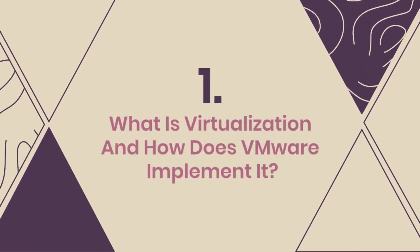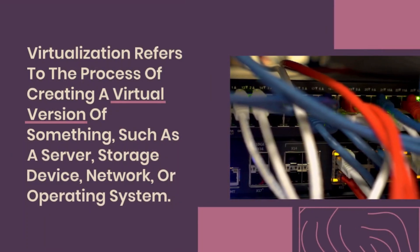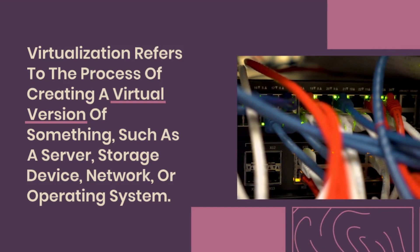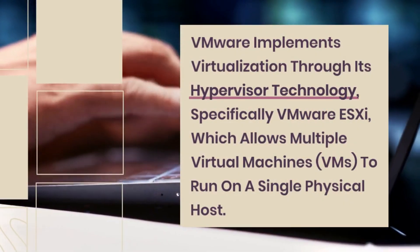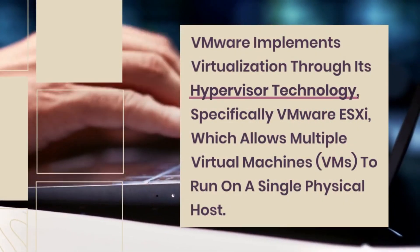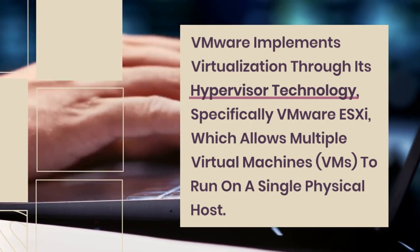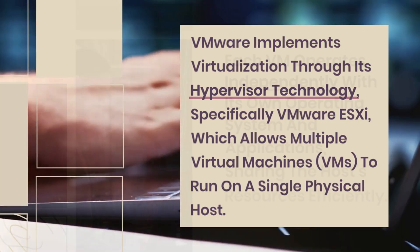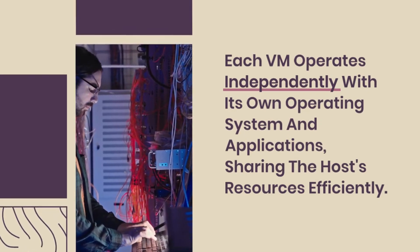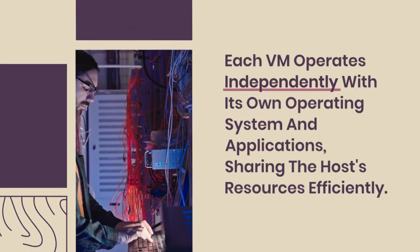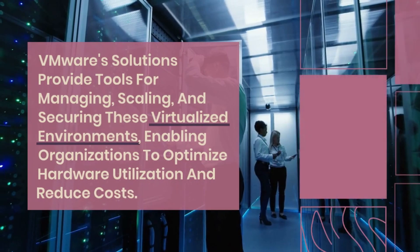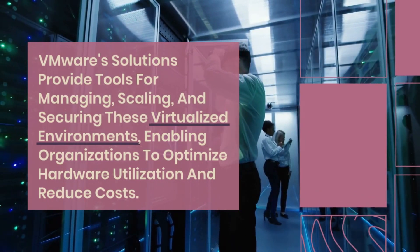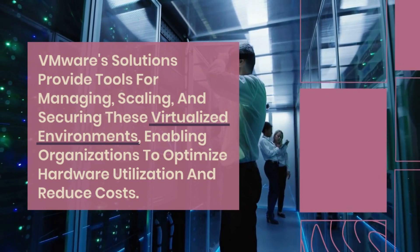Question 1: What is virtualization and how does VMware implement it? Virtualization refers to the process of creating a virtual version of something, such as a server, storage device, network, or operating system. VMware implements virtualization through its hypervisor technology, specifically VMware ESXi, which allows multiple virtual machines to run on a single physical host. Each VM operates independently with its own operating system and applications, sharing the host's resources efficiently. VMware solutions provide tools for managing, scaling, and securing these virtualized environments, enabling organizations to optimize hardware utilization and reduce costs.